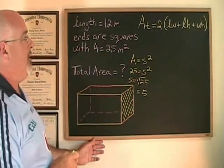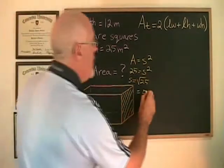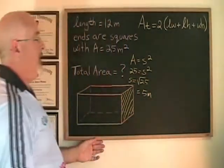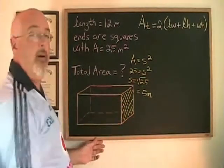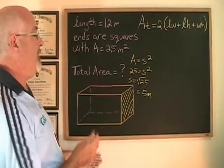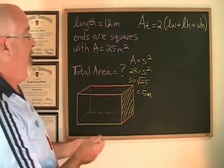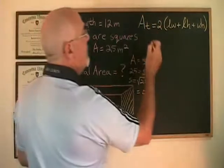And because the unit was meters and meters squared, the unit of the side length is meters. The sides of this square are 5 meters in length. That tells us both the width and the height of our rectangular prism. Both of them are equal to 5, and now we can fill in our formula.